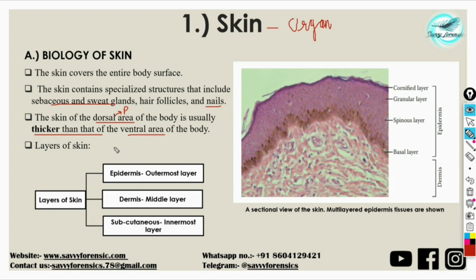Let's understand the layers of skin. If we take a sectional view, the skin is composed of many layers: the epidermis, which is the outermost layer; the dermis, which is the middle layer; and the subcutaneous layer, which is the innermost layer. See this in the diagram here.